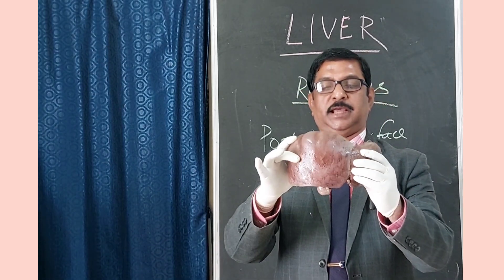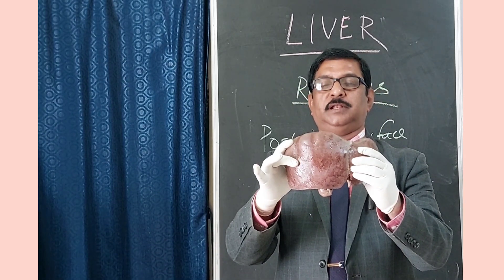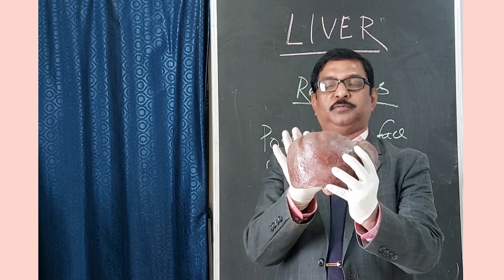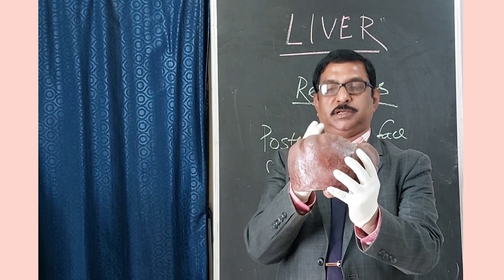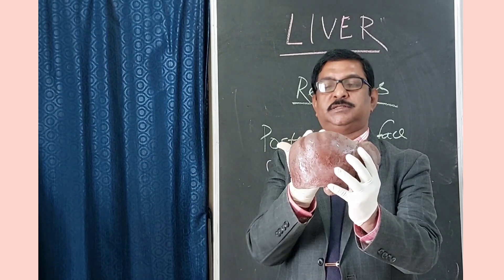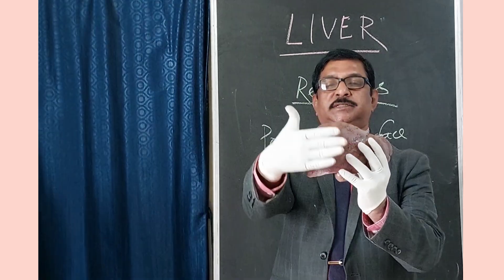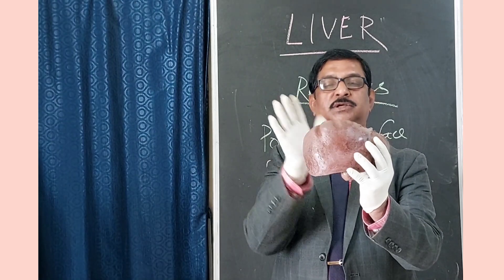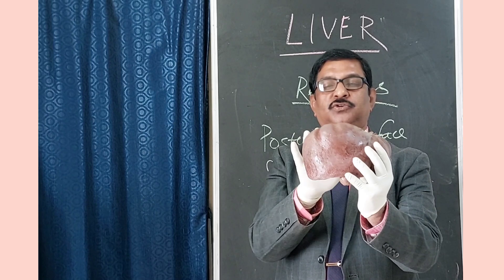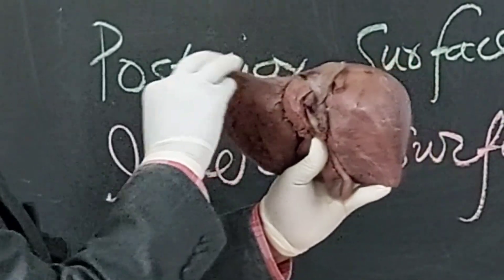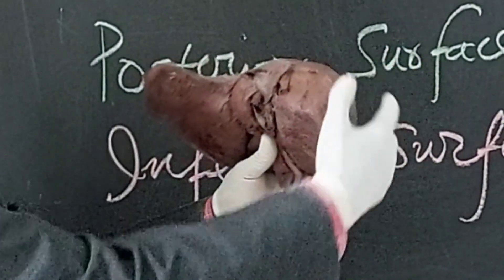This is the anterior position of the liver. This is the posterior surface, it is facing towards me. This is superior surface, this is anterior surface, so this is posterior surface. This is the left lobe, smaller, and this is the right lobe, larger.